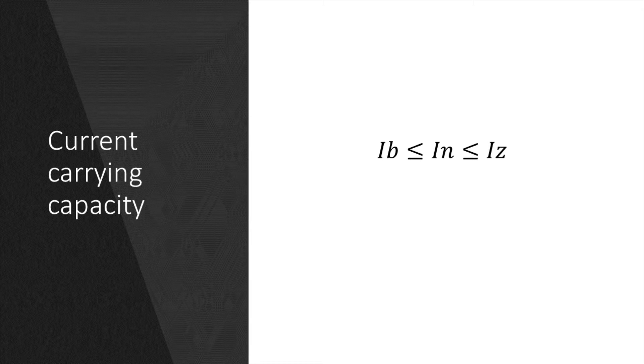The normal way of doing this is by making sure that the design current is less than or equal to the rating of the protective device, and then making sure that the protective device is rated less than or equal to the IZ of the cable. This can be expressed as shown here on the screen.